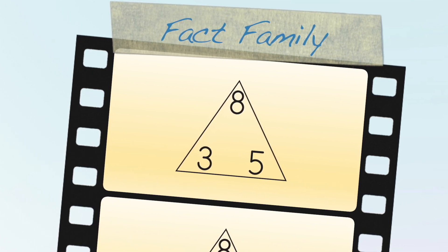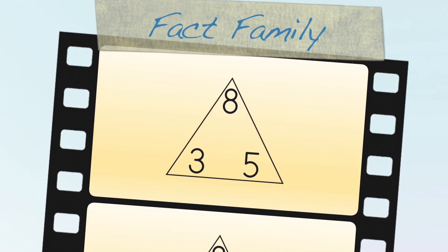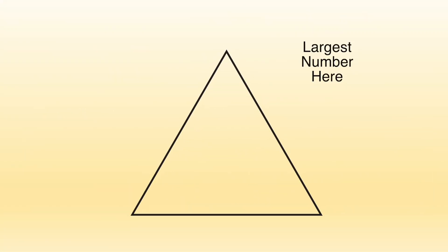A fact family is made up of three numbers that go together to make addition and subtraction facts. You put the largest number at the top of the triangle, and the other numbers go to the bottom.